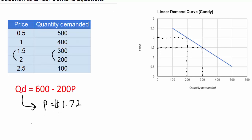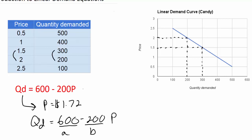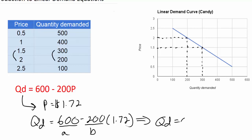Well, good thing I have my demand equation. All I need to do is plug my price into my equation and calculate the quantity demanded at a price of one dollar seventy-two. My equation is: quantity demanded equals six hundred — that's our A variable — minus two hundred — that's our B variable, the price coefficient — times the price. To find the quantity at a price of one seventy-two, I replace P with one dollar and seventy-two cents and solve for QD.